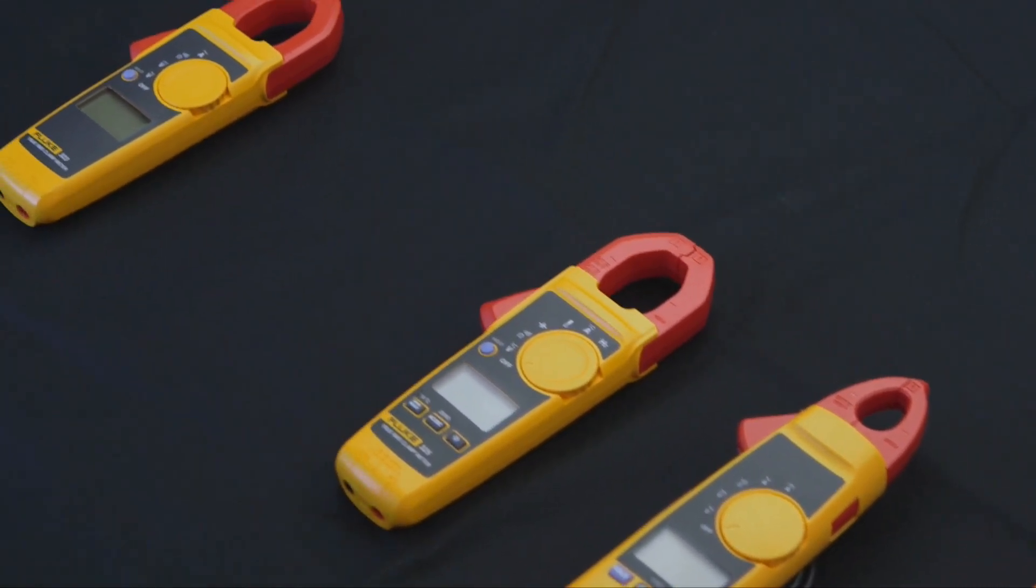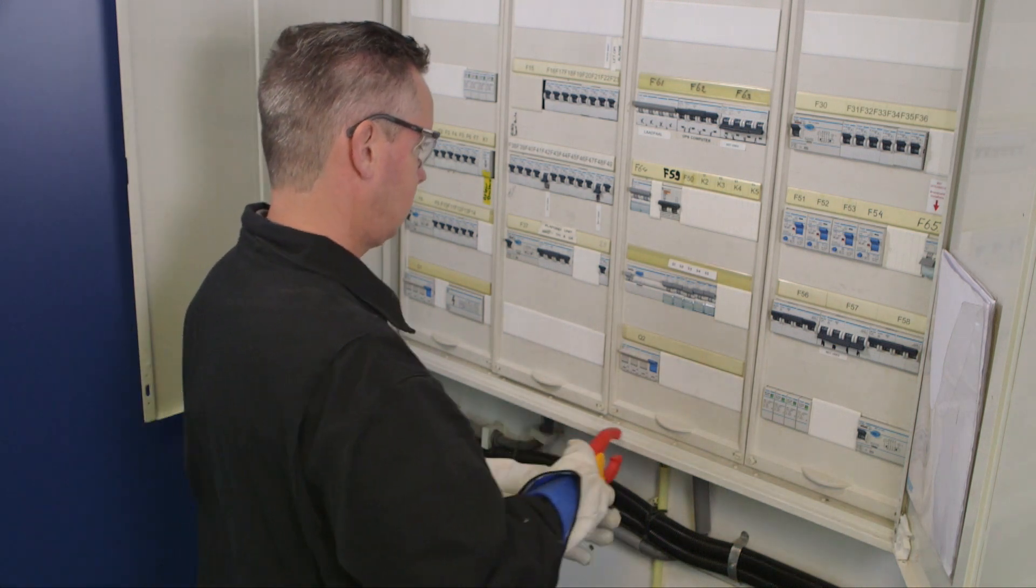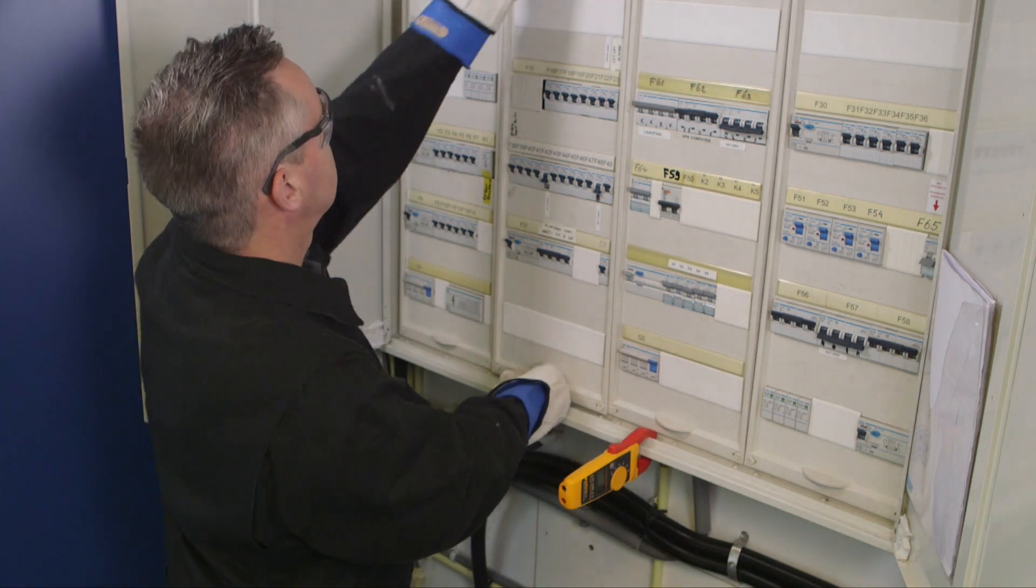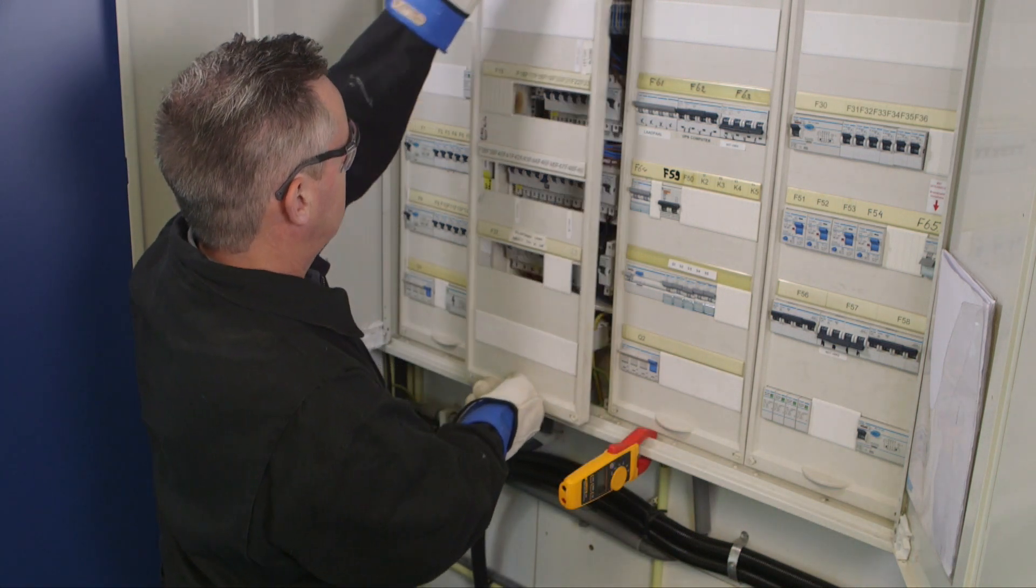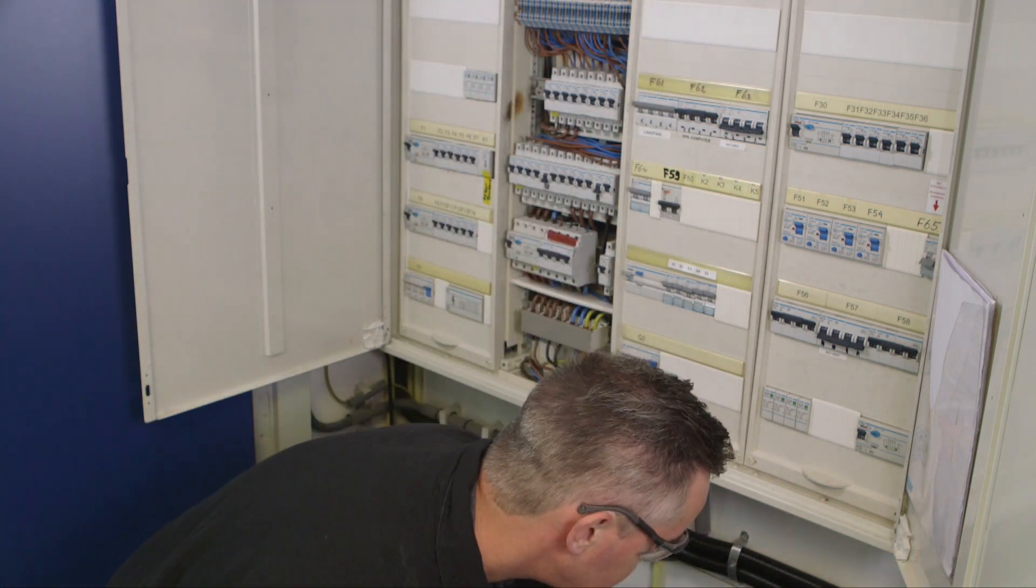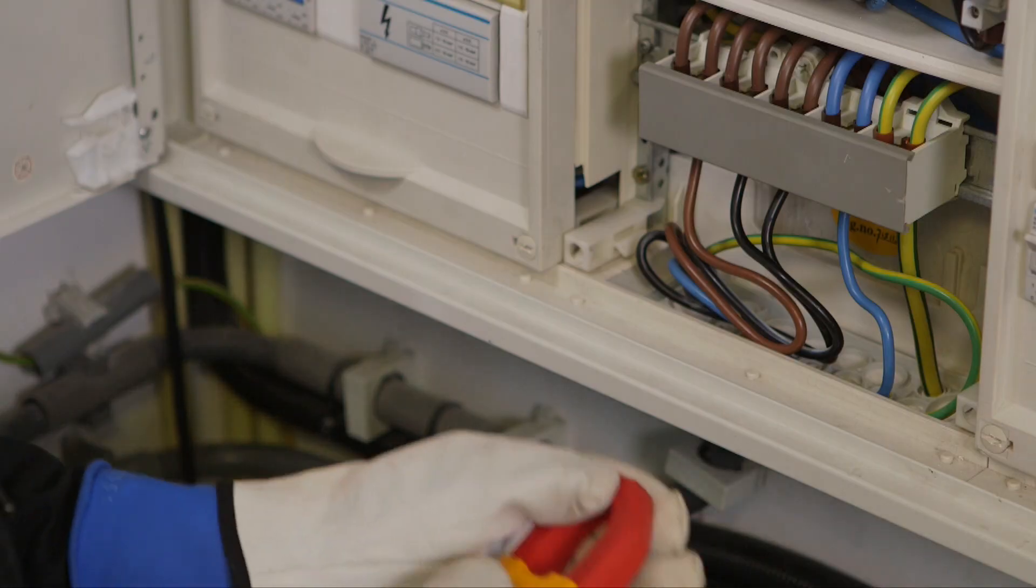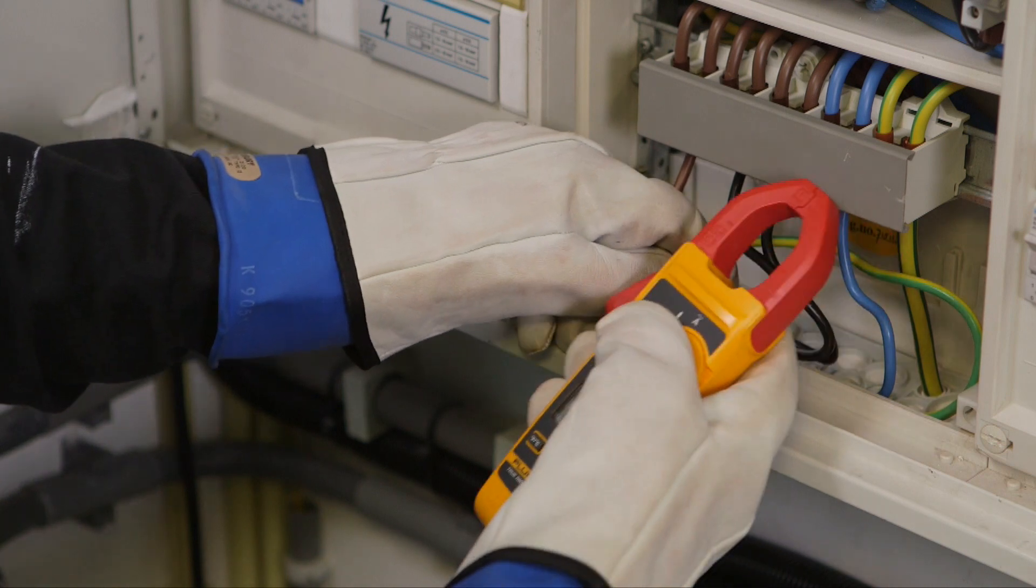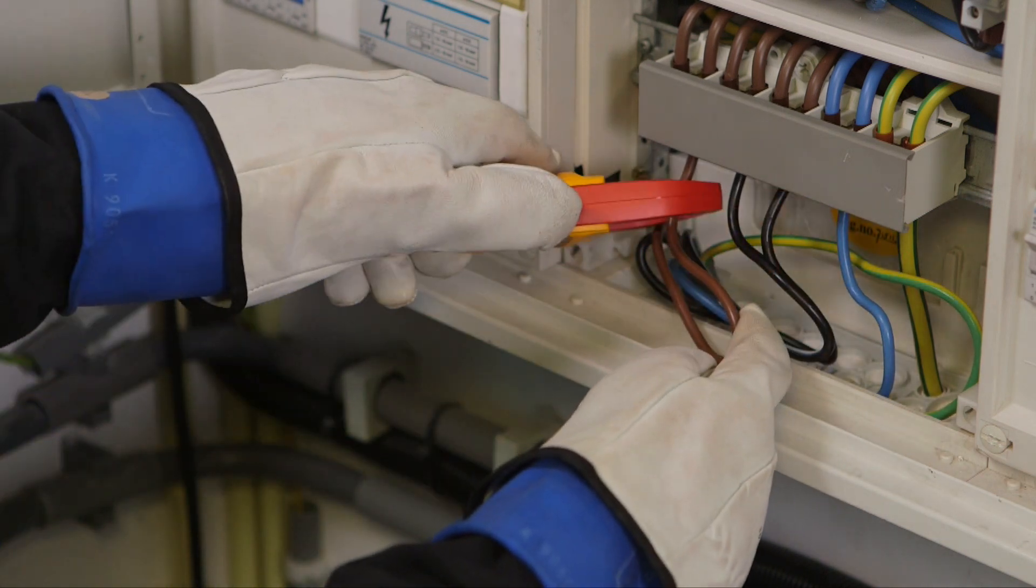The Fluke 324 clamp meter is an ergonomic troubleshooting tool for commercial and residential electricians. It's designed to verify the presence of AC current, AC voltage and continuity of circuits, switches, fuses and contacts.